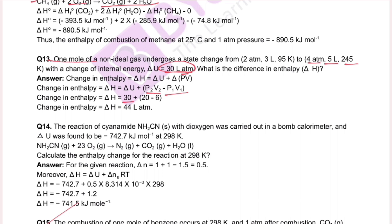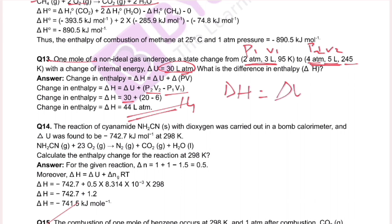Delta U equals 30 litre-atm. We calculate delta(PV) as P2V2 minus P1V1. P2 equals 4 atm and V2 equals 5 litres, so P2V2 equals 20. P1 equals 2 atm and V1 equals 3 litres, so P1V1 equals 6. Therefore delta(PV) equals 20 minus 6 equals 14 litre-atm, and delta H equals 30 plus 14.